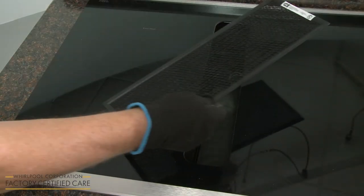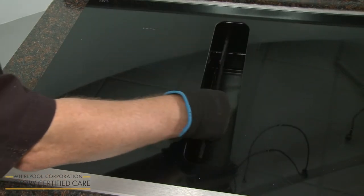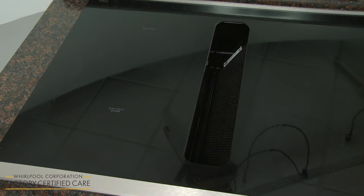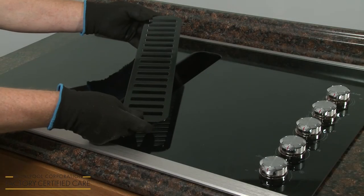Install the grease filter so the top of the filter rests against the right side of the vent opening and the bottom of the filter rests against the left side of the vent chamber. Then install the vent grill.